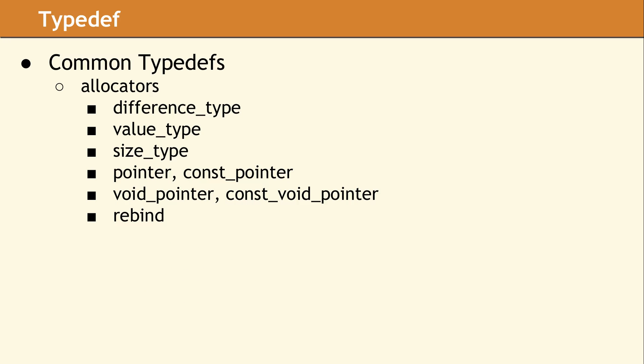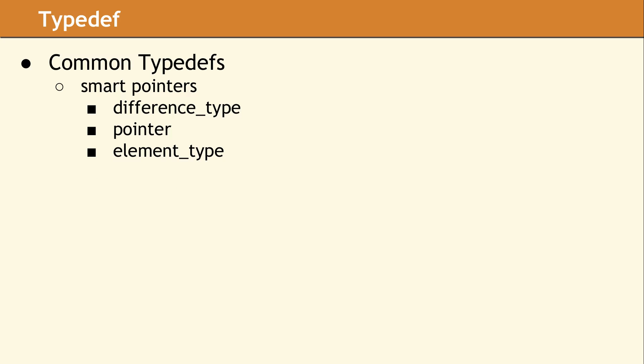This is a list of the aliases defined by allocator classes in the standard library. Most of these are similar to what we've discussed in the previous sections, but the rebind alias is different. It is used to convert an allocator of one data type to an allocator of a different data type. Another set of common type defs are those associated with smart pointers. The element type type alias is an alias for the data type the smart pointer is pointing to.